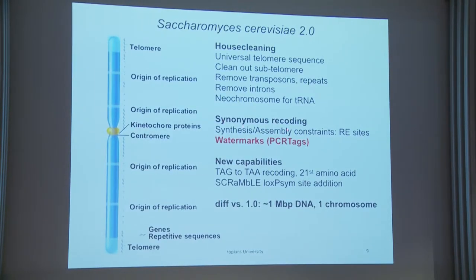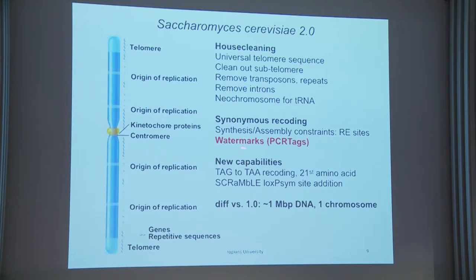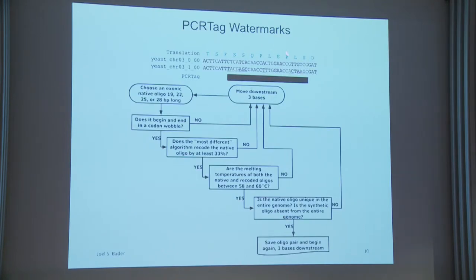We're also doing synonymous recoding for two reasons. One is that synthesis and assembly technologies have restriction enzyme requirements — either restriction enzymes are used to do part of the synthesis or assembly, or for late-stage ligation reactions. So sometimes we have to add and remove restriction enzyme binding sites, and we do that with synonymous recoding of protein coding regions. We're also putting in watermarks called PCR tags: we take a protein coding region and change the DNA sequence so that it is essentially unique in the genome. Two recoded tags close enough together that we can easily make a PCR amplicon to check quickly that the DNA content is synthetic as opposed to wild type.